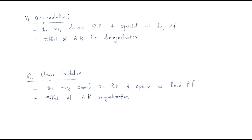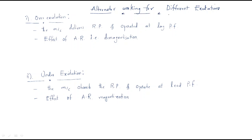Now we will discuss how the alternator works when we give different excitations. The formula for reactive power is: Q = (V / Xs) × (E·cos δ − V), where V is terminal voltage, Xs is synchronous reactance, E is the EMF, and δ is the torque angle.